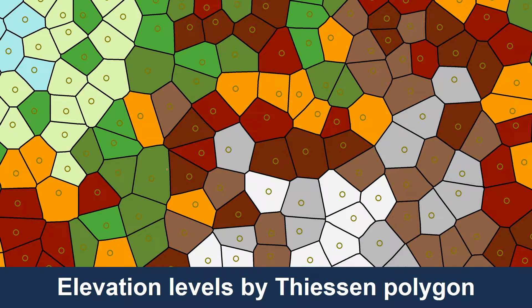These are elevation values assigned to the Thiessen polygons based on the sample point values. I've created a statistical surface using the allocation tool. You'll notice the color of each polygon is exactly the same as the color of the sample point, showing that it is the exact same value. The estimated value for each polygon is exactly the same as the sampled value. Therefore, this is a method that is an exact interpolator.